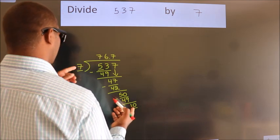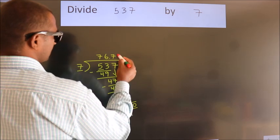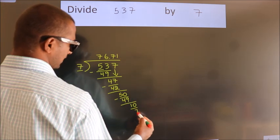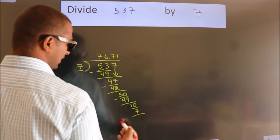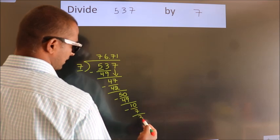A number close to 10 in 7 table is 7 times 1 equals 7. Now, we subtract. We get 3.